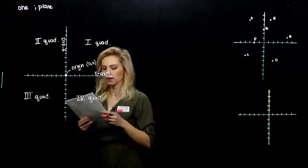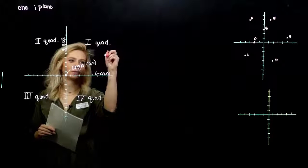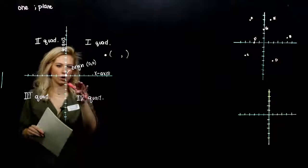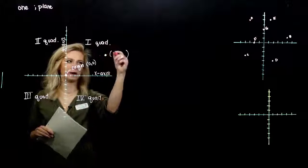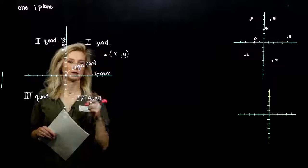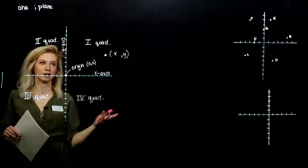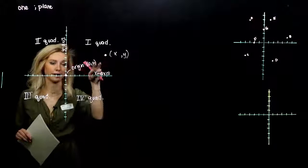We can talk about what a different point in each quadrant is going to look like. If I have a point in the first quadrant, my x and y coordinates are going to be positive x and positive y. Any point in the first quadrant is going to have positive, positive.